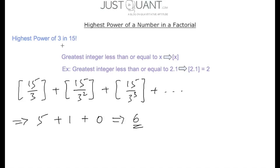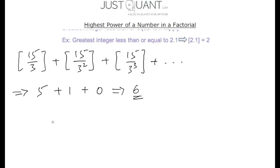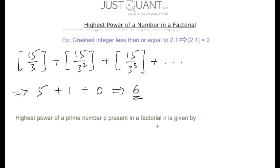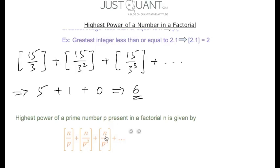Here we see that 3 is a prime number. This technique of calculating the highest power of a number in a factorial is applicable to primes. Generalizing: the highest power of a prime number p present in n factorial is given by the greatest integer of n/p, plus the greatest integer of n/p², plus the greatest integer of n/p³, and so on. We proceed as long as the denominator is less than the numerator.